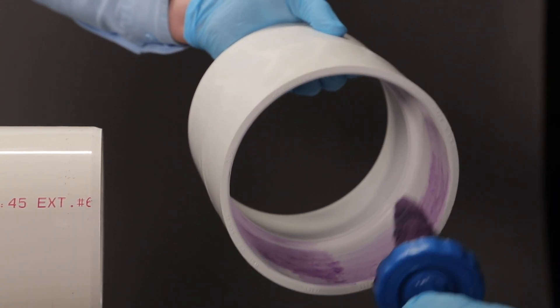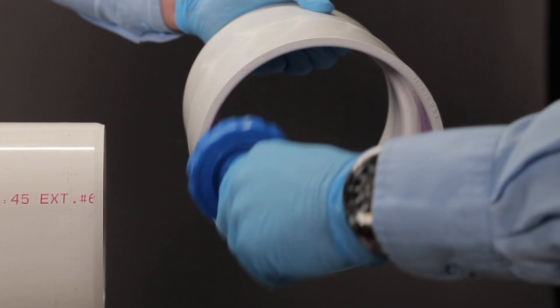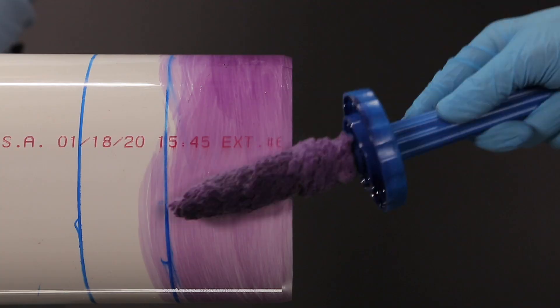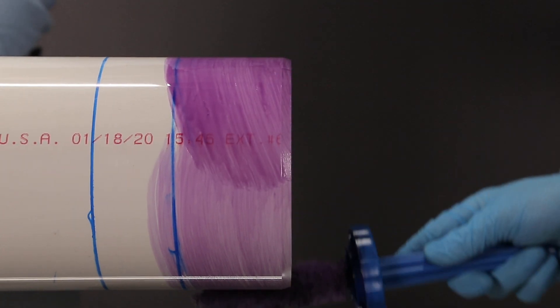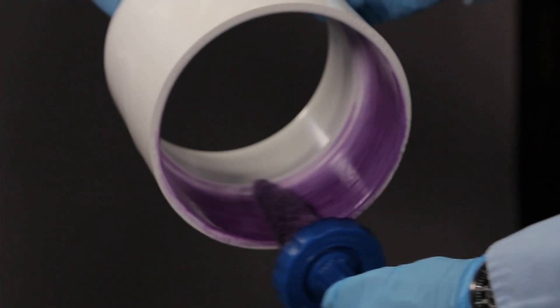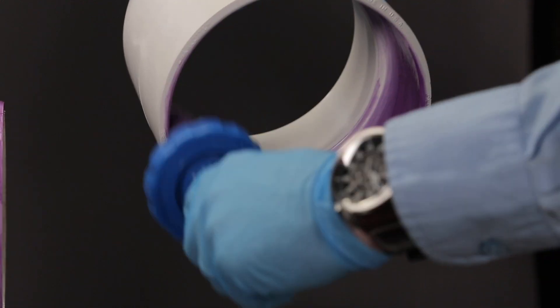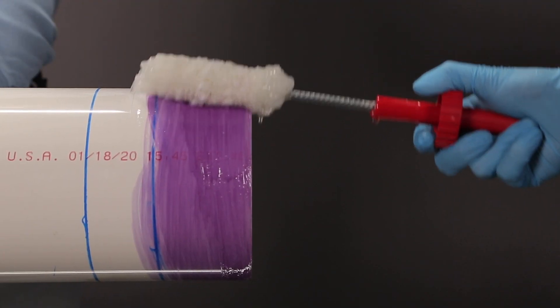For PVC and CPVC of all sizes, first apply primer to the fitting, then to the pipe, then apply a second coat of primer to the fitting. Really work it in aggressively to work the primer into the surface.